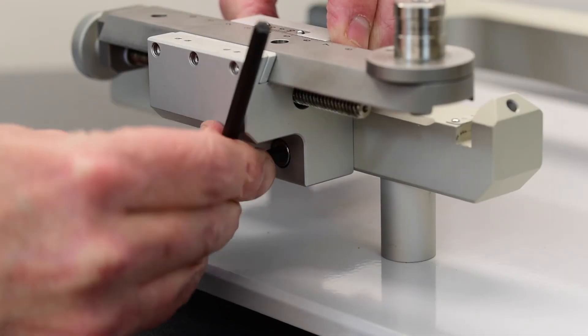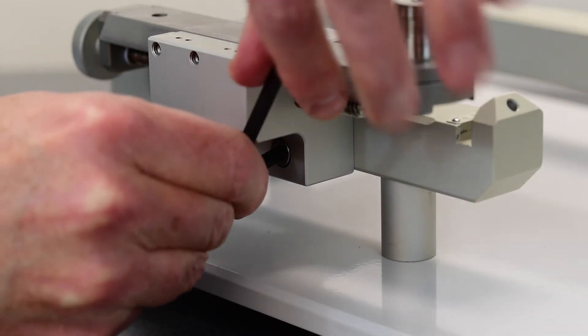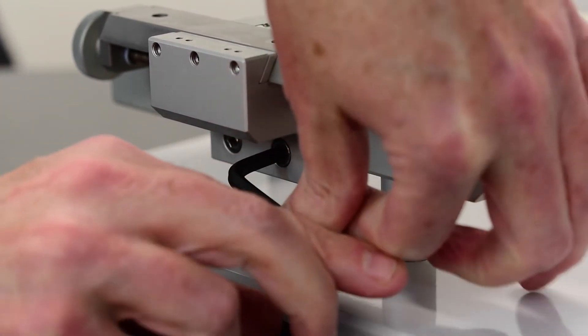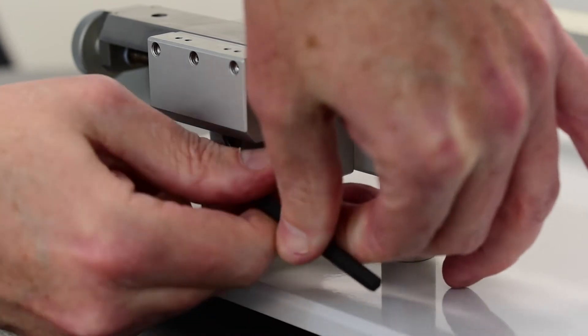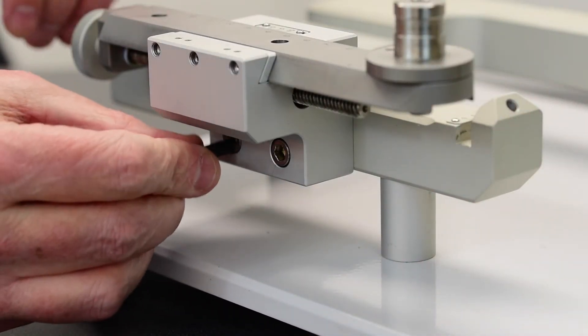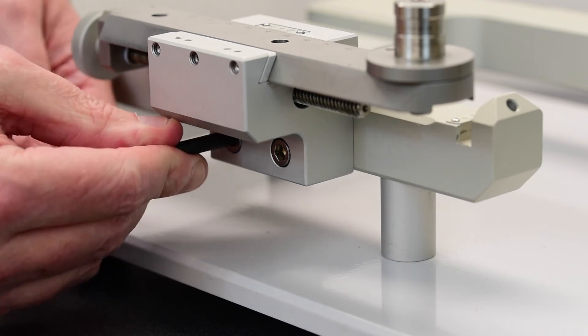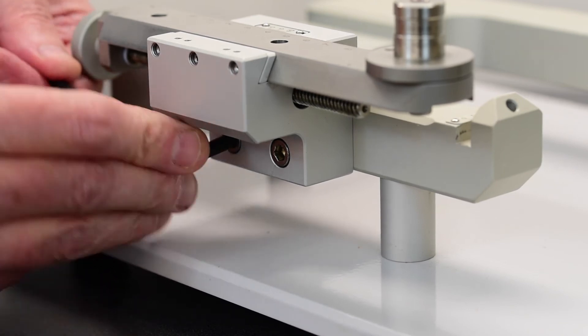And I'm going to use the other end of the hex key and simply put a lot of force onto it. You really can't over tighten this, so go ahead and put as much force as you need by hand on both screws.